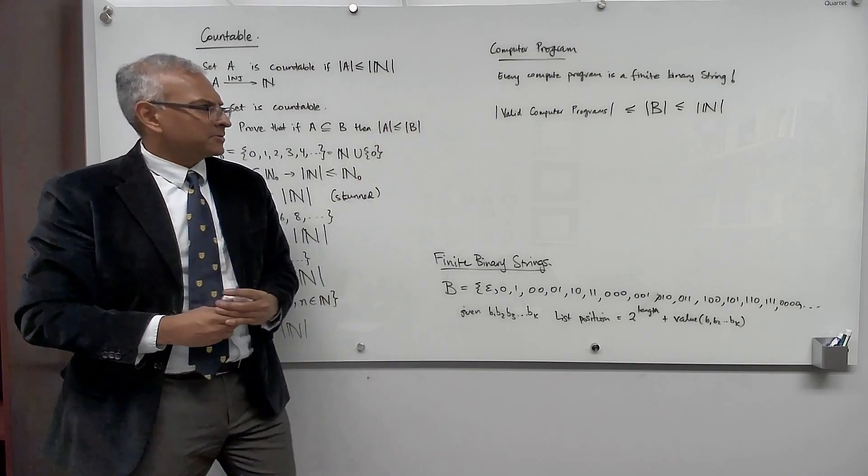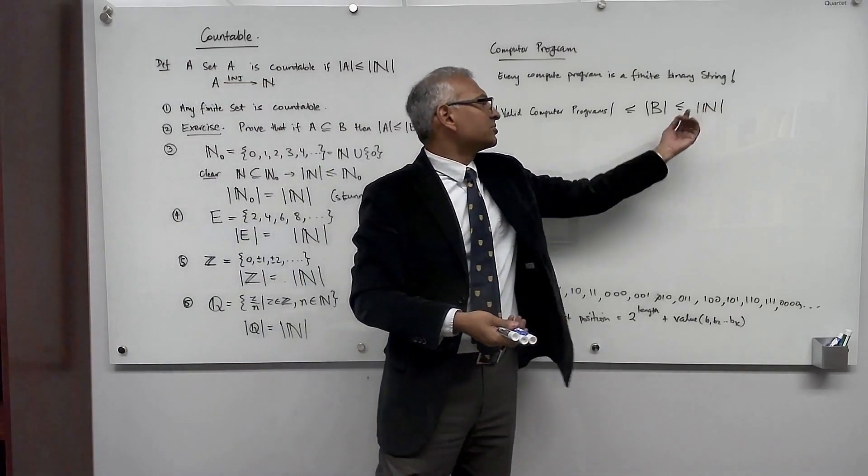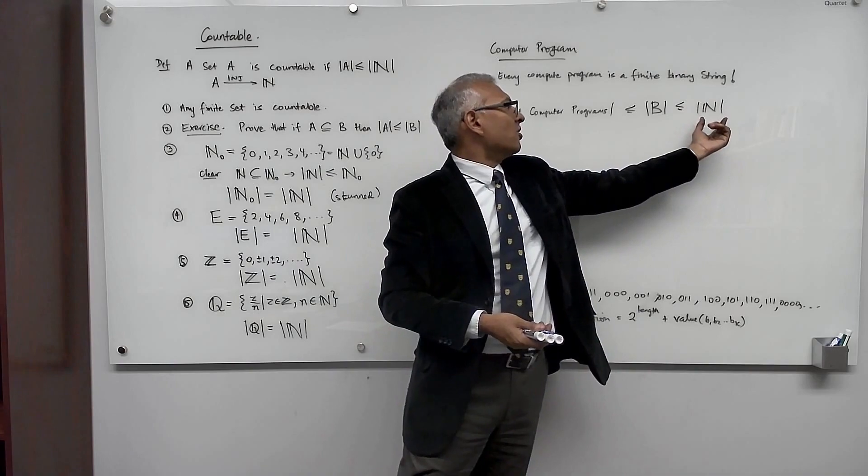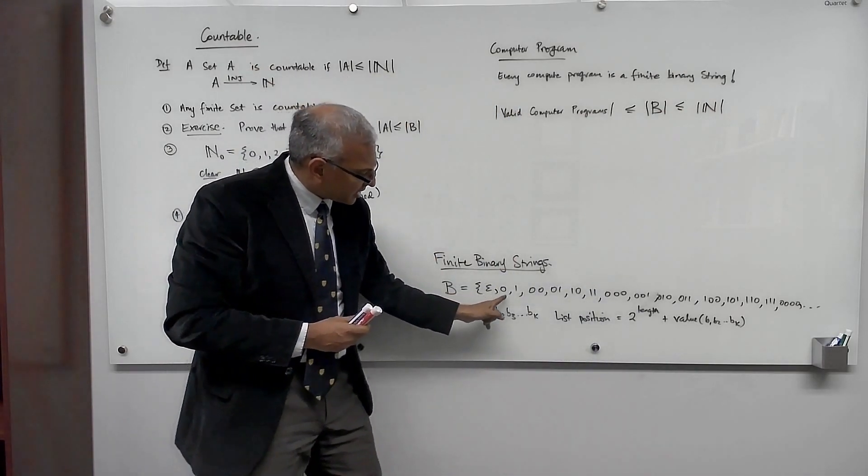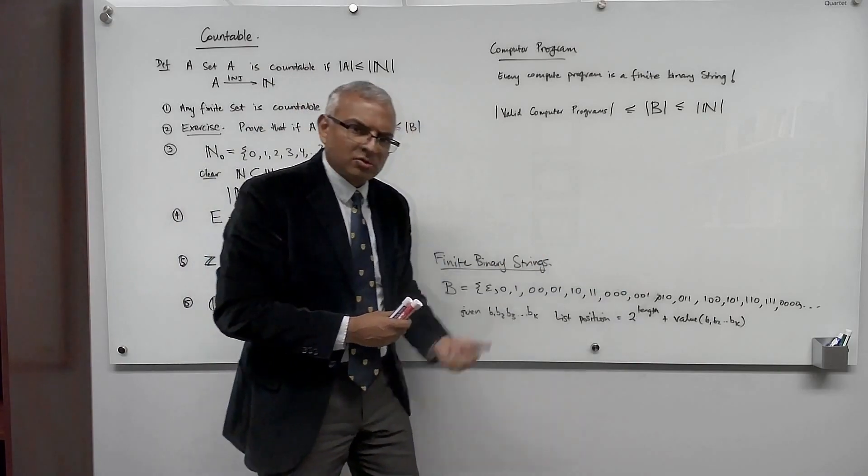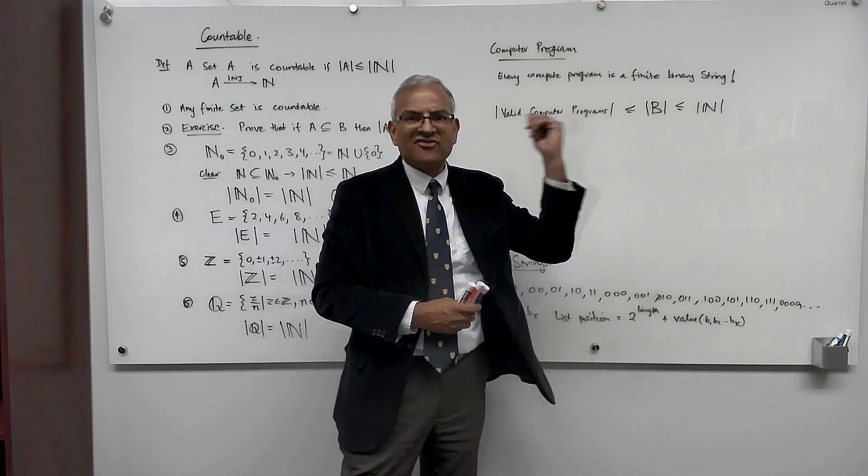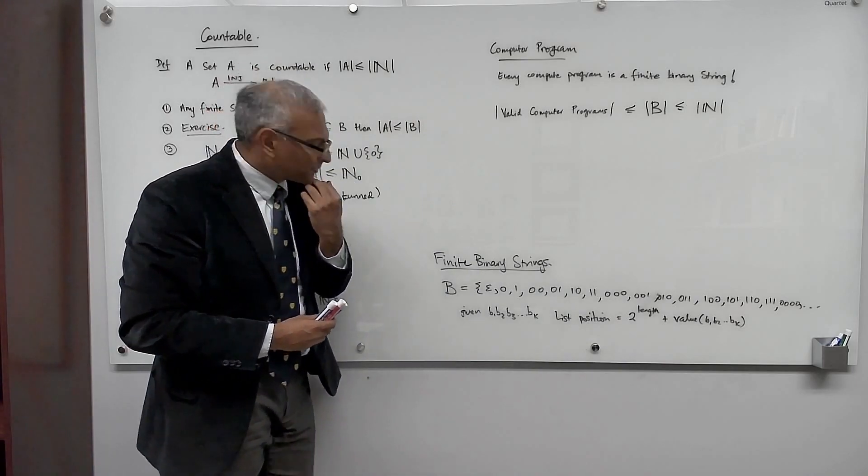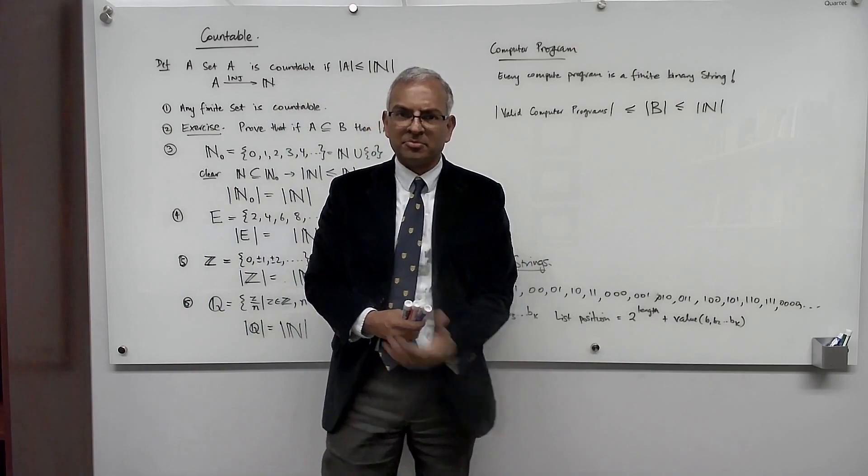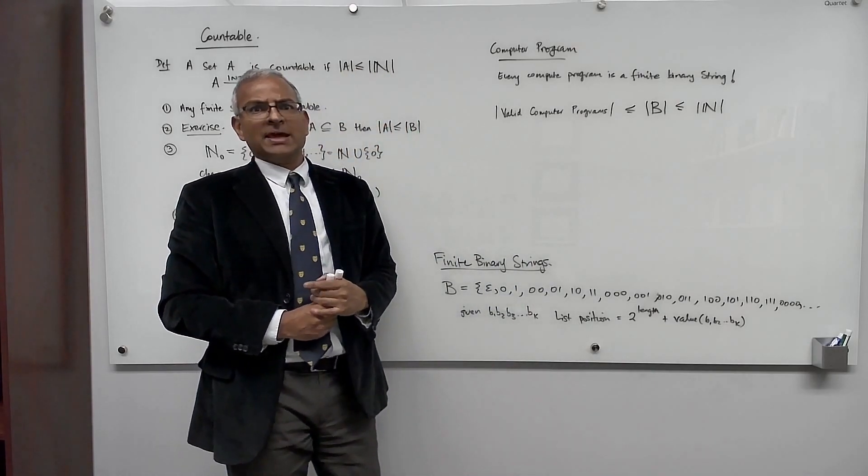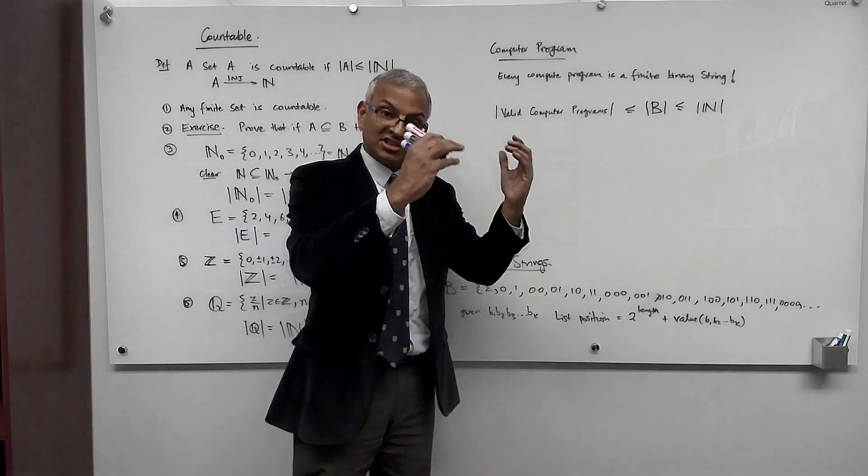Okay, turns out that the cardinality of the finite binary strings equals, because you can also get an injection from the natural numbers to the finite binary strings. So here's the first, second, third, fourth, fifth, sixth, seventh, and so on. We can index, we can order, we can list the finite binary strings. What does that mean? That means that we can index, we can order, we can list the valid computer programs. Do we care? Yes we care. But we'll see why later.